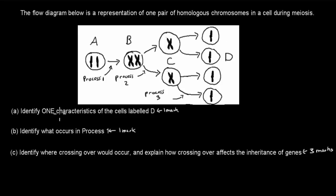Part A: identify one characteristic of the cells labeled D. Part B: identify what occurs in process 1. Part C: identify where crossing over would occur and explain how crossing over affects the inheritance of genes, and that's worth 3 marks. Pause the video and attempt the question, and press play when you're ready.